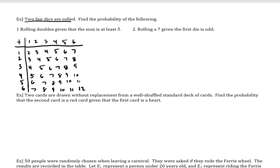However, let's now read the rest of the problem. Find the probability of rolling doubles, given — in green — given that the sum is at least five. So the sum is at least five. Remember, 'at least' means five is the least and you could have more than five. So this is the same as five or more.